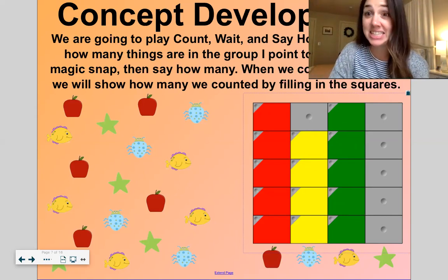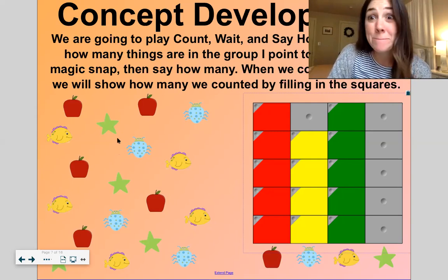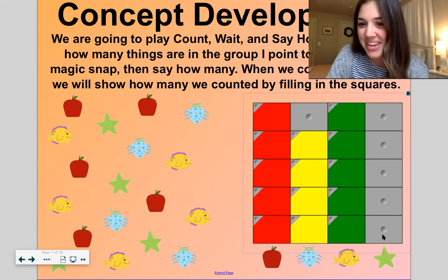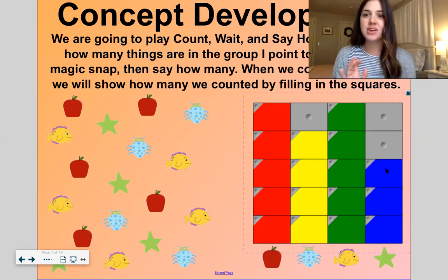Now last, let's count the stars. You count. Blurt, how many? Three. One, two, three.